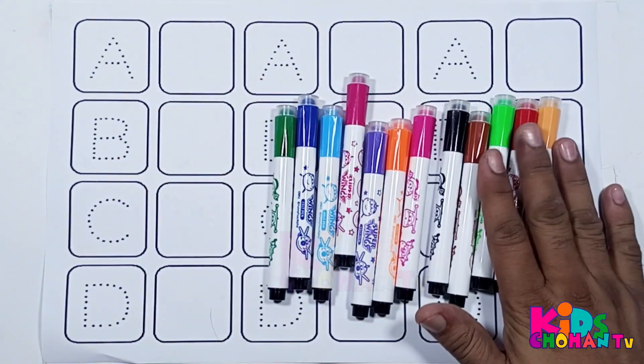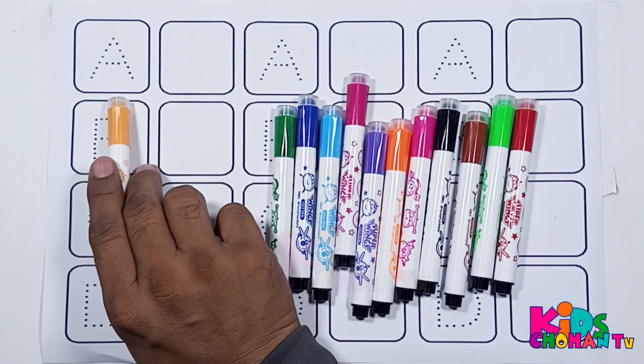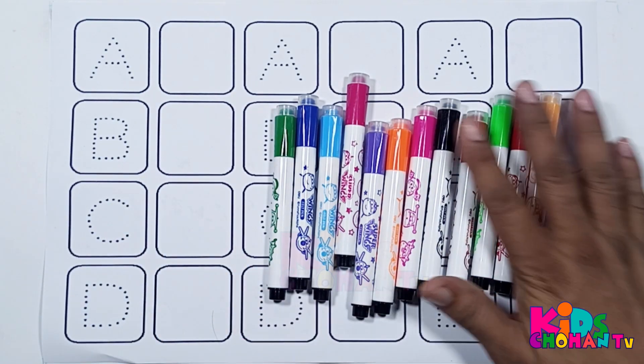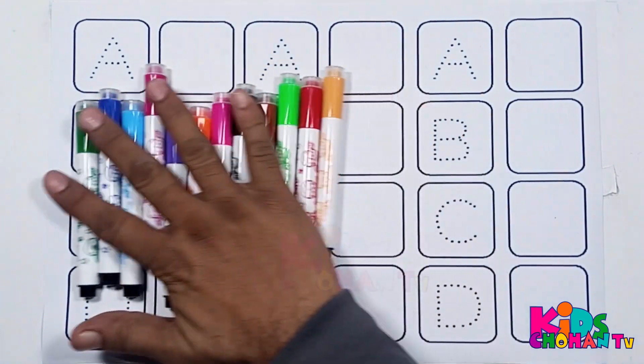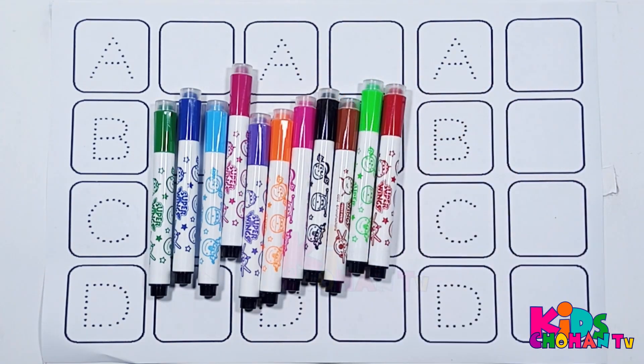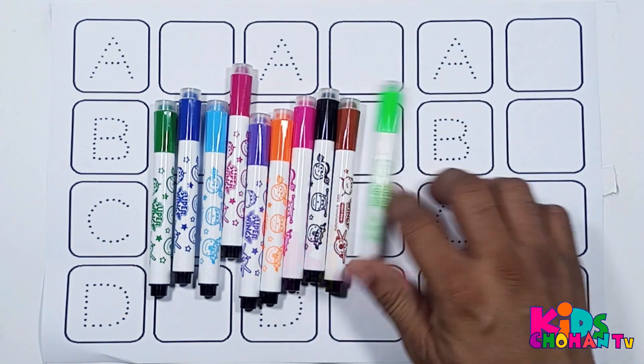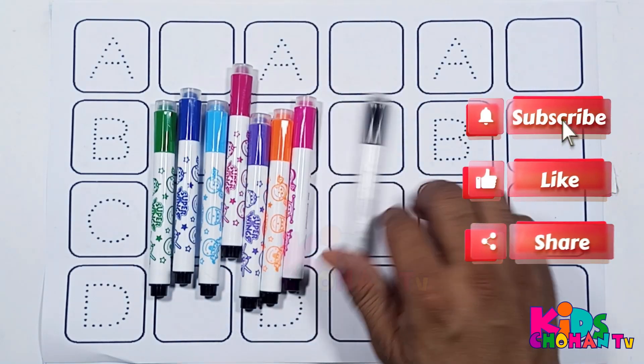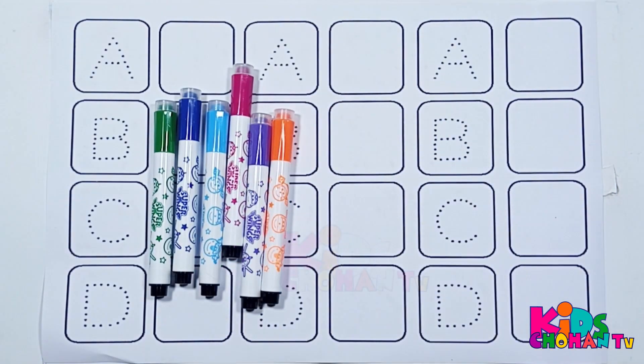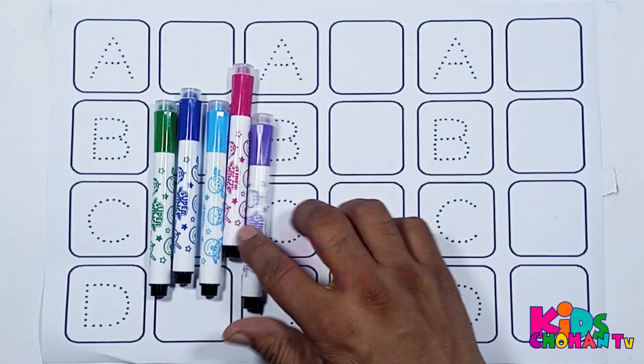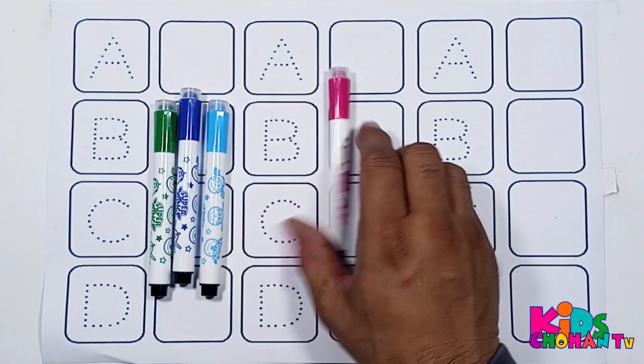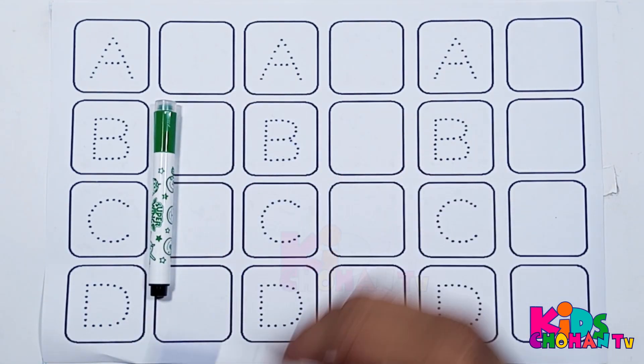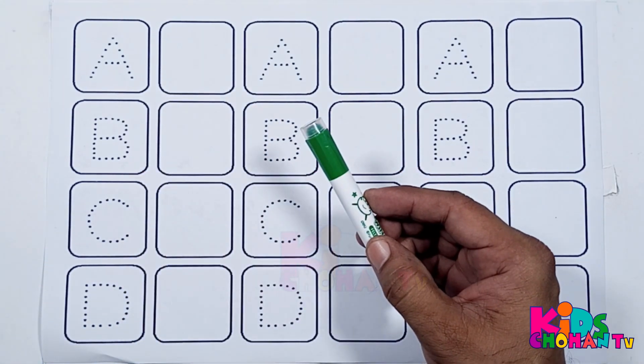Kids, we will dress A, B, C, D. Let's learn color's name. Yellow color, red color, light green color, brown color, black color, pink color, orange color, violet color, sky blue color, blue color, and green color.